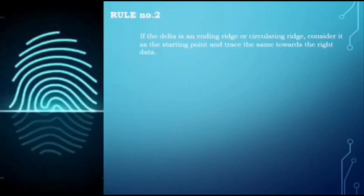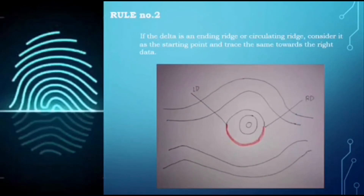Rule number two: if the delta is an ending ridge or a circulating ridge, consider it as the starting point and trace the same towards the right delta. Based on the illustration, the delta is not an ending ridge but a circulating ridge, therefore we start the tracing towards the right delta. Always check first whether the delta is an ending ridge or circulating ridge so that we can easily trace our ridge towards the right delta.